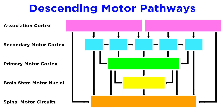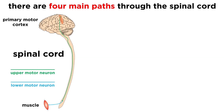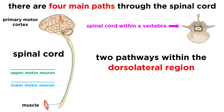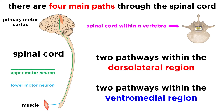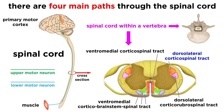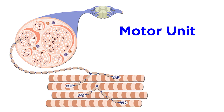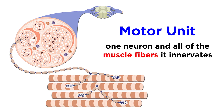That's a brief outline of what we call descending motor pathways. Signals descend along four main paths: two of which move through the dorsolateral region of the spinal cord, and two of which move through the ventromedial region. These first two are the dorsolateral corticospinal tract and the dorsolateral corticorubrospinal tract, while the other two are the ventromedial corticospinal tract and the ventromedial corticobrainstem spinal tract. These all originate in the cerebral cortex but have different functions. Information travels all the way to motor units, which are comprised of a single neuron and all of the skeletal muscle fibers that it innervates — and that's where the body obeys the brain.